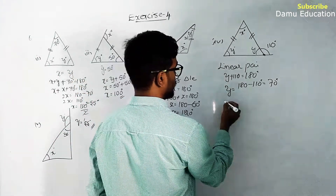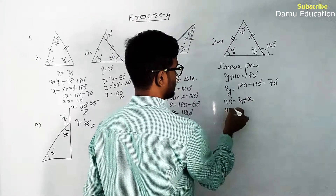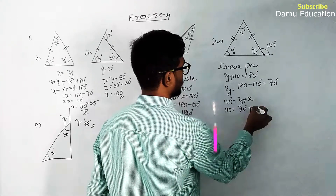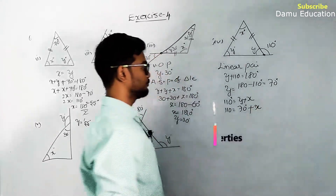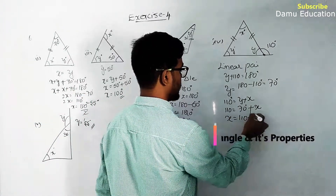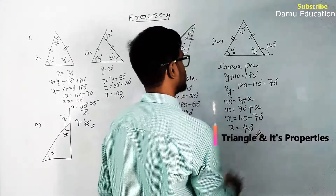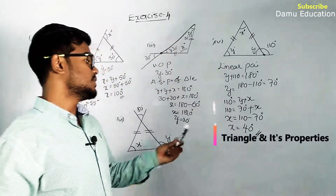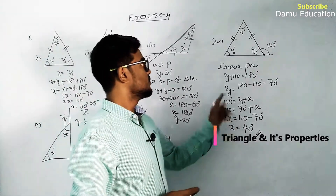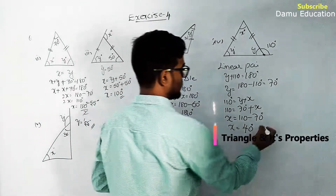Using the exterior angle property: 110 = y + x, so 110 = 70 + x, giving x = 110 - 70 = 40°. Therefore x = 40° and y = 70°.